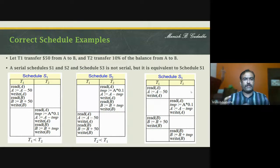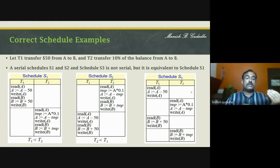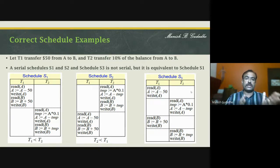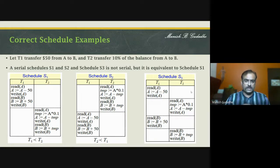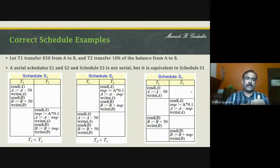Even if I am executing S3, I am going to get the same intended result even though it is not a serial schedule. It is equivalent to S1, producing the exact same result as S1. That's what we are trying to understand about equivalence. There are three types of equivalences which we can have for a schedule.